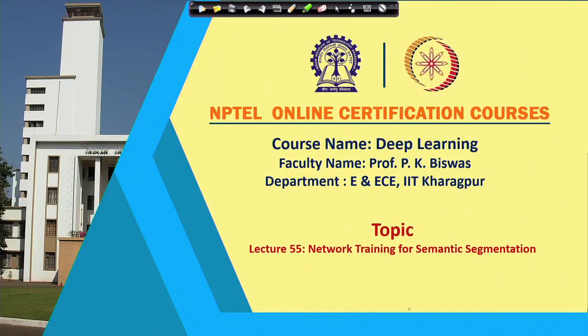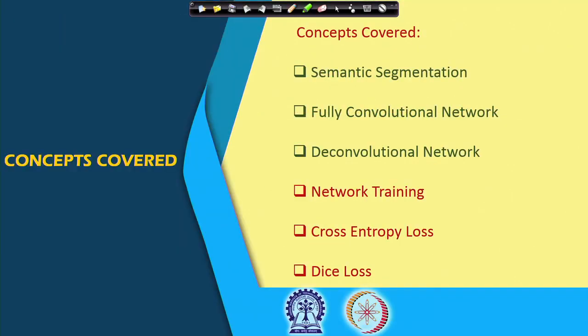For semantic segmentation, we have discussed two different architectures. One is the fully convolutional neural network, and the other is the deconvolutional neural network. In the case of the fully convolutional neural network, it is a reinterpretation of the deep convolutional neural network, where the deep CNN is actually designed for classification purposes.